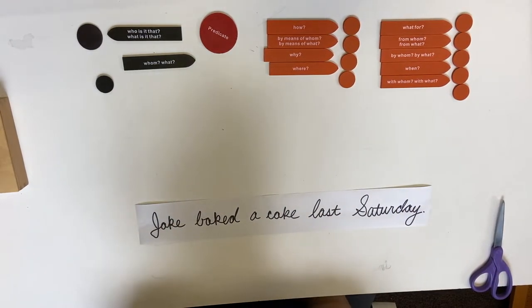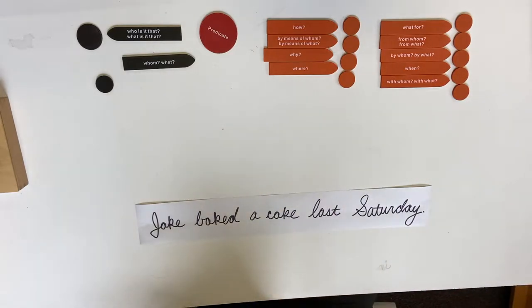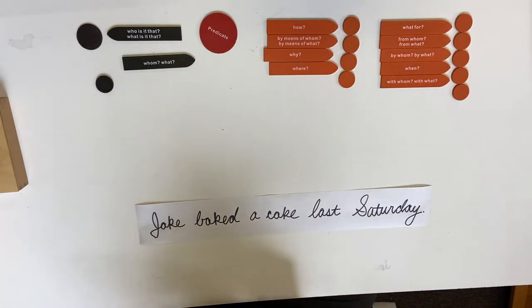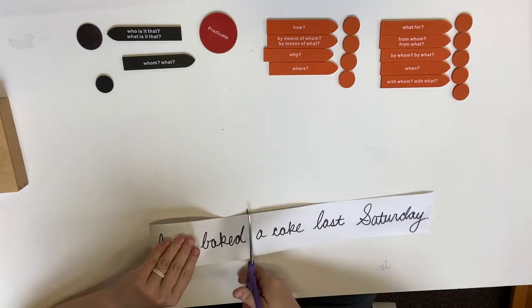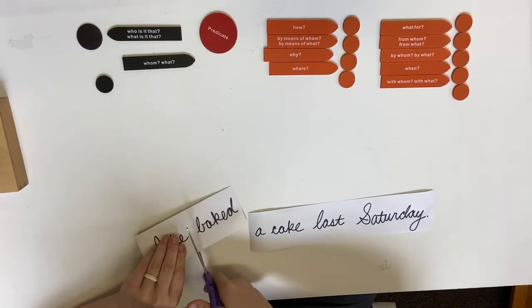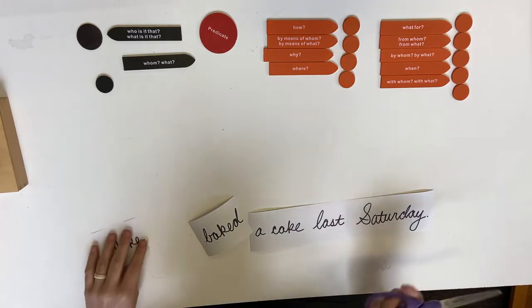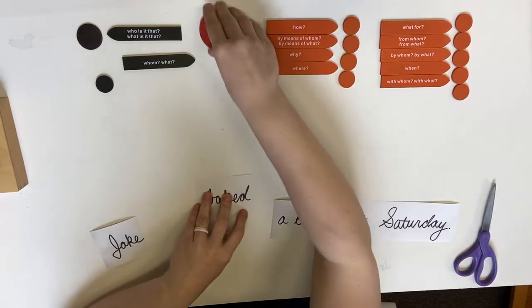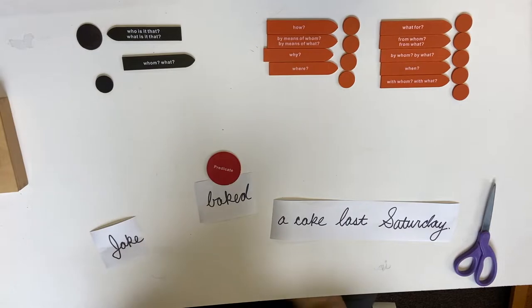Jake baked a cake last Saturday. Oh, that makes me very happy because I really like cake. So what is the action — our predicate? Baked. That is the action that was taken. So the predicate is baked.